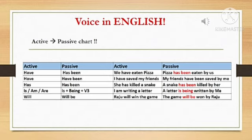The next one — we can sometimes use has been or have been. By using have, we use have been in passive. For example: I have saved my friends. By passive conversion: My friends have been saved by me.